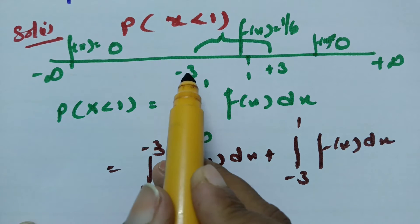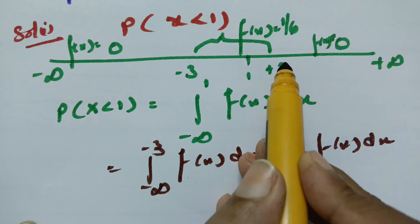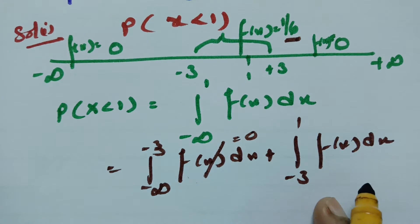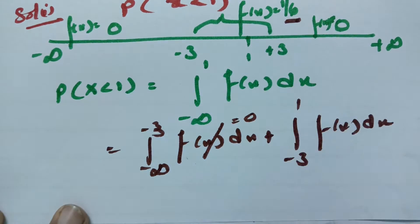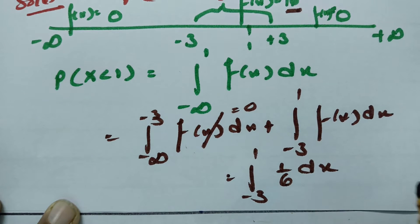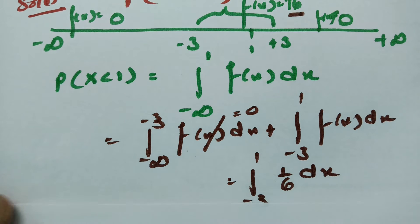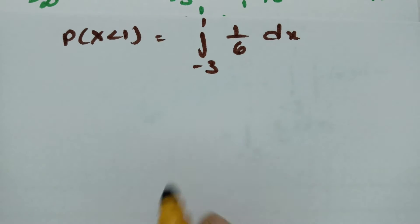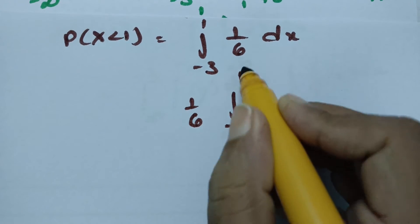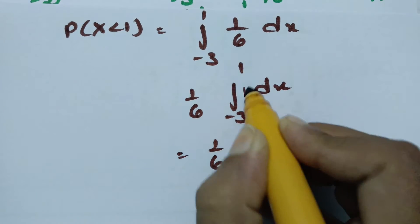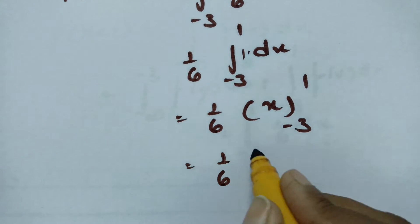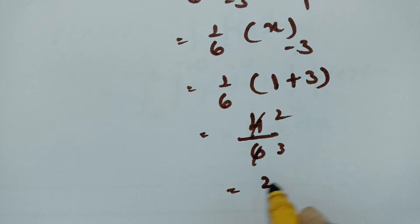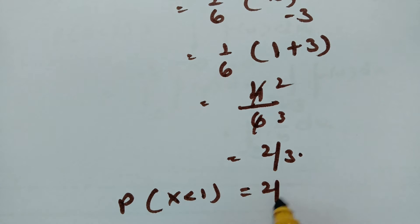From -3 to +3, where 1 lies, f(x) = 1/6. So P(X < 1) = integral from -3 to 1 of (1/6) dx = (1/6) · x evaluated from -3 to 1 = (1/6)(1 - (-3)) = (1/6)(4) = 4/6 = 2/3. Therefore, the probability of X less than 1 is 2/3.